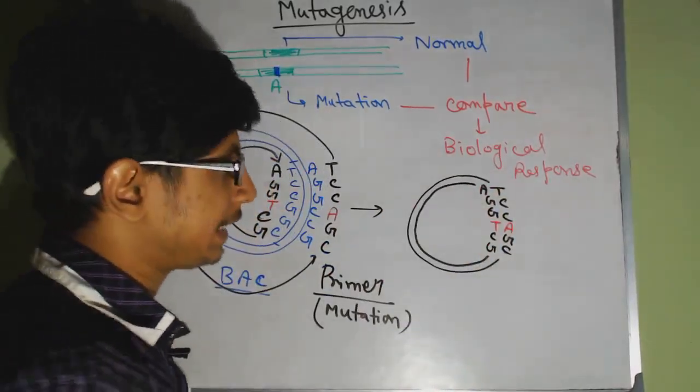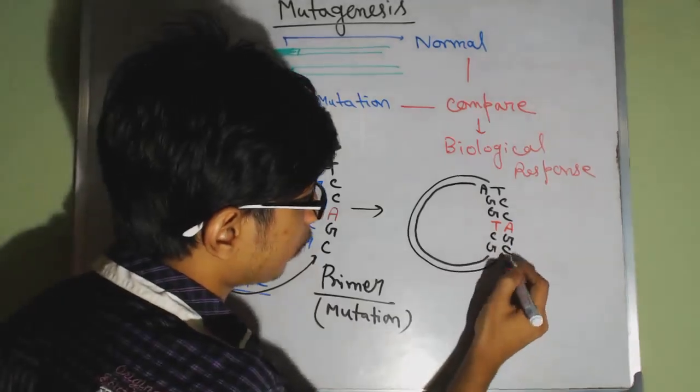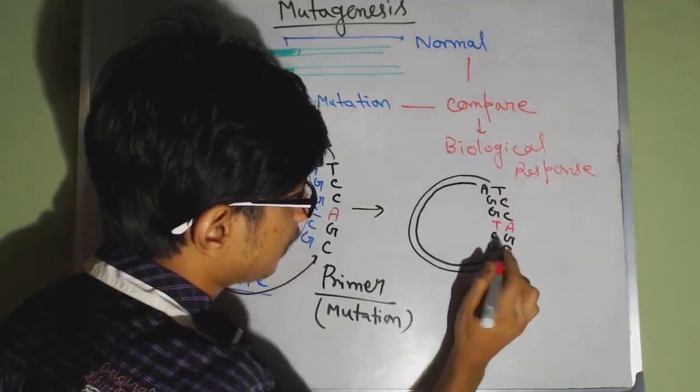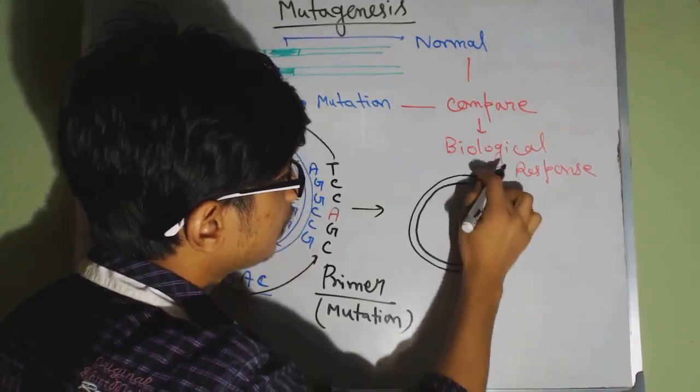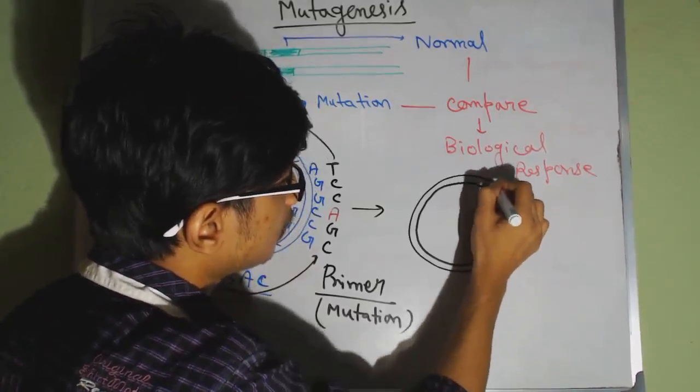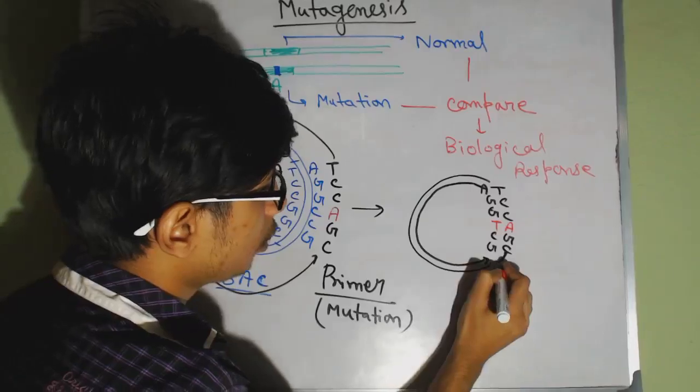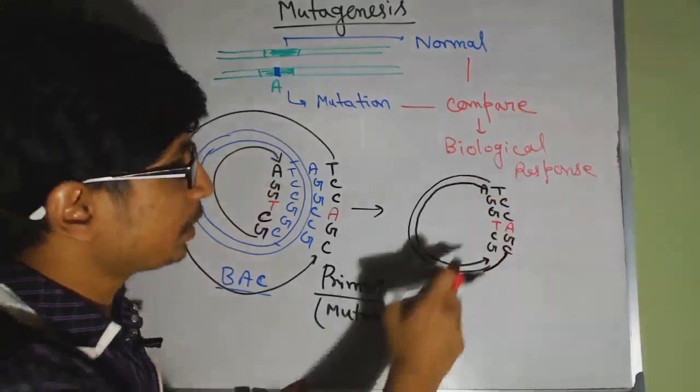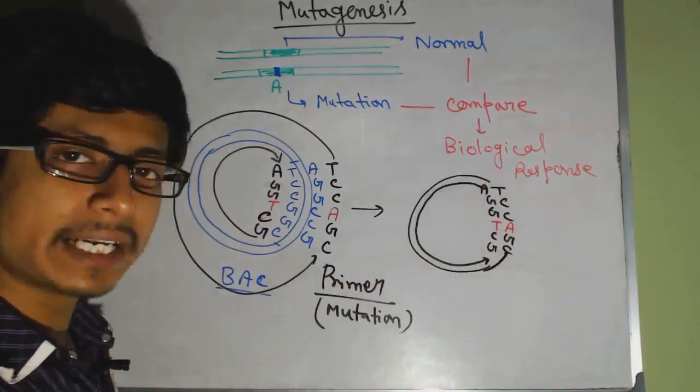We need to join that nick. Remember, the nick will be present from two different locations. Let's say the nick formed here, this is a nick, and this is another nick. So we have nicks generated, and we need to seal those nicks. How do you seal that nick?